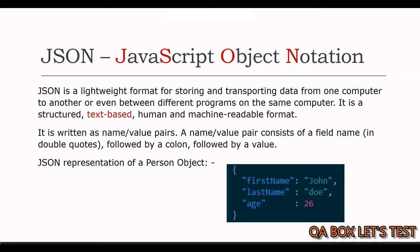It is a structured, text-based, human and machine readable format. JSON was based on a subset of the JavaScript language and is commonly used with JavaScript, but it is a language independent data format. Code for parsing and generating JSON data is readily available in many programming languages. JSON file names use the extension dot JSON. A JSON document is written as name-value pairs, which consists of a field name in double quotes, also known as a key, followed by a colon and then followed by a value.